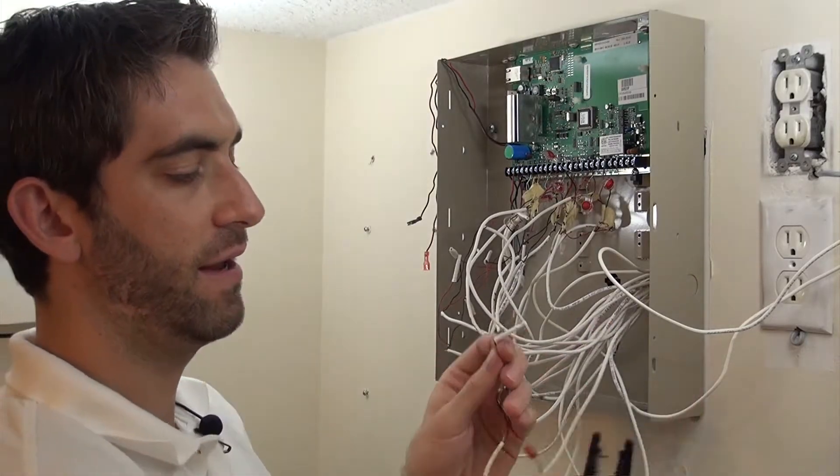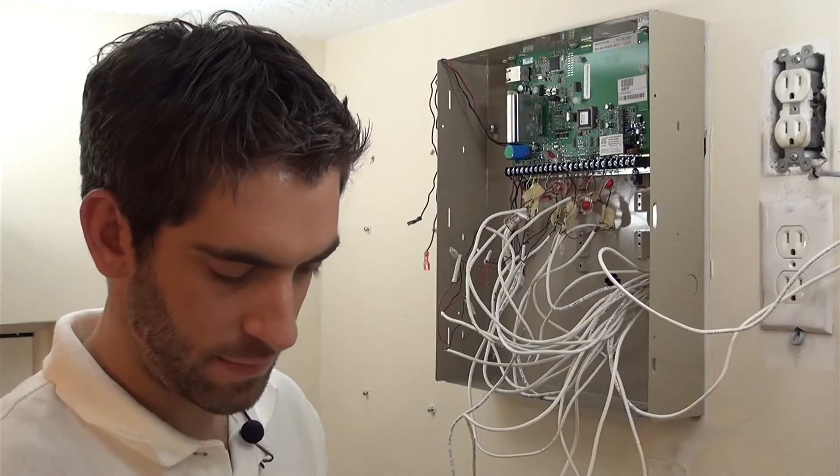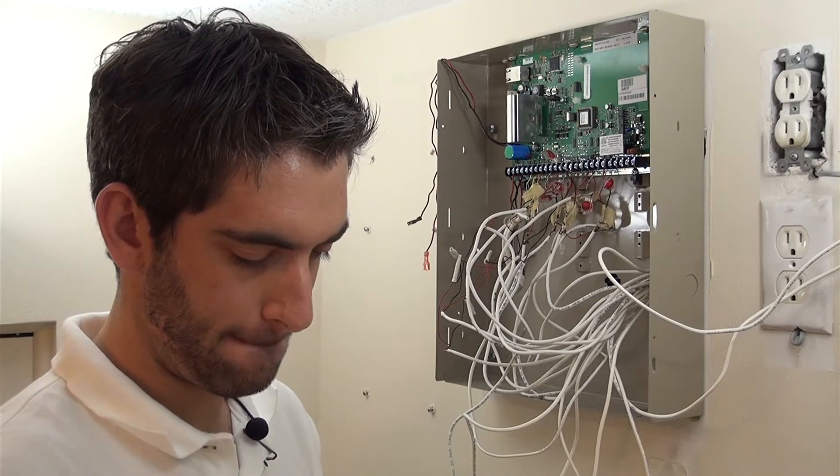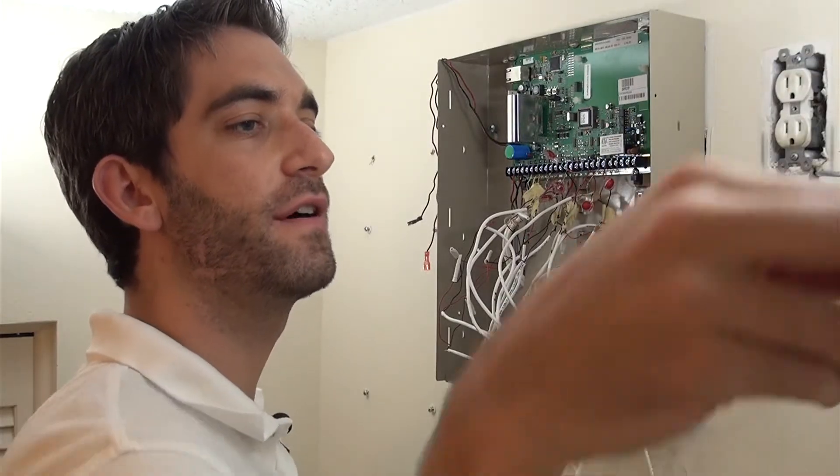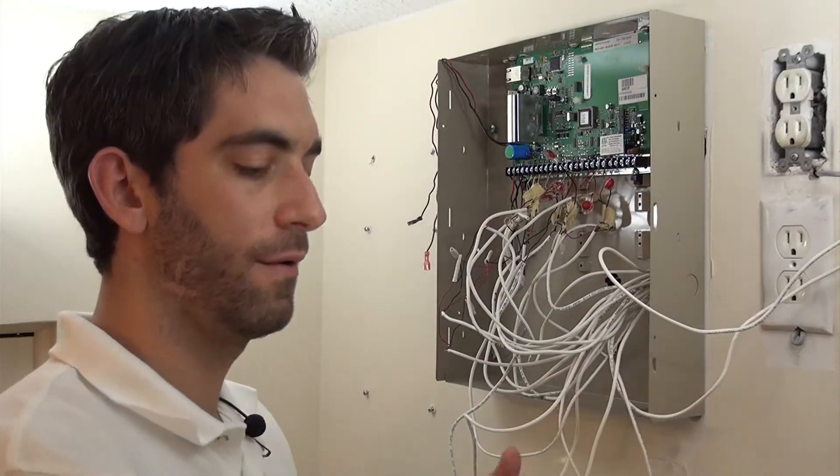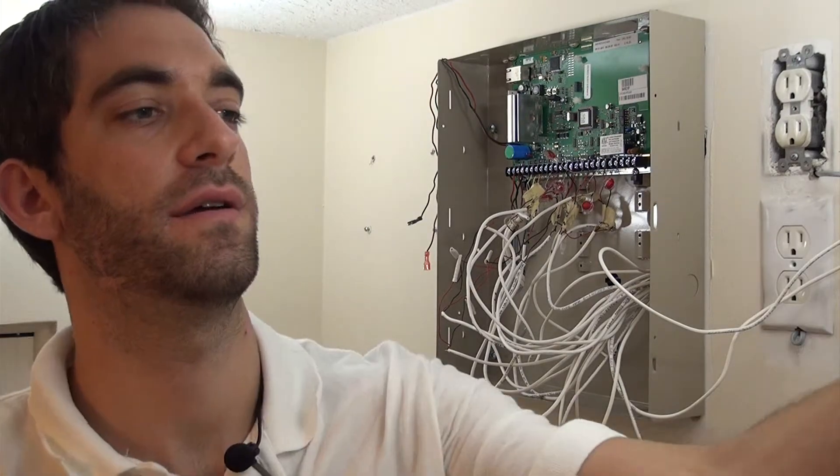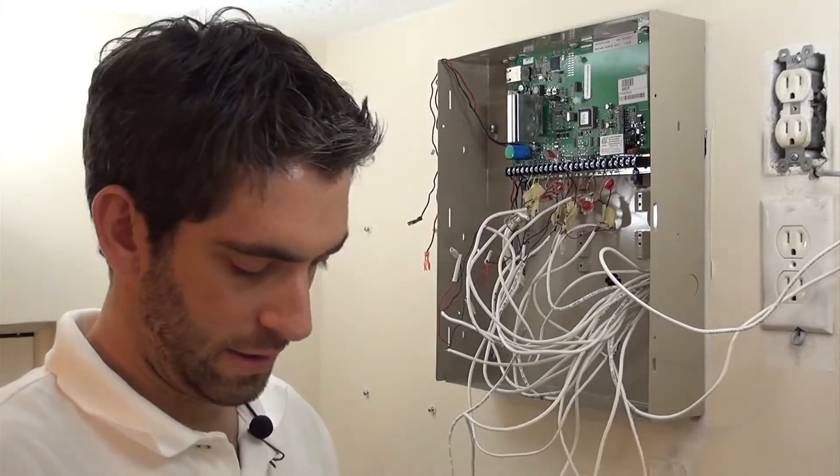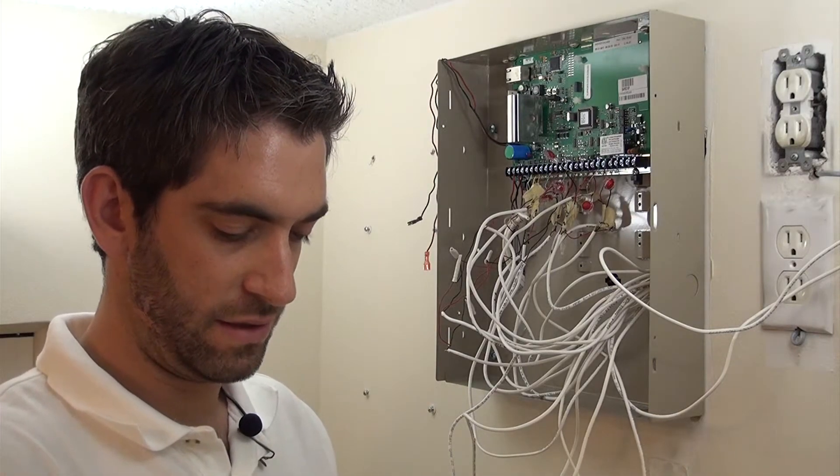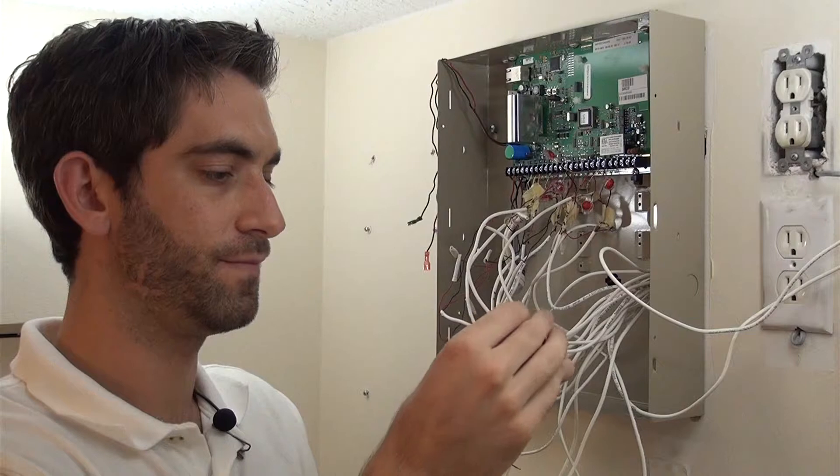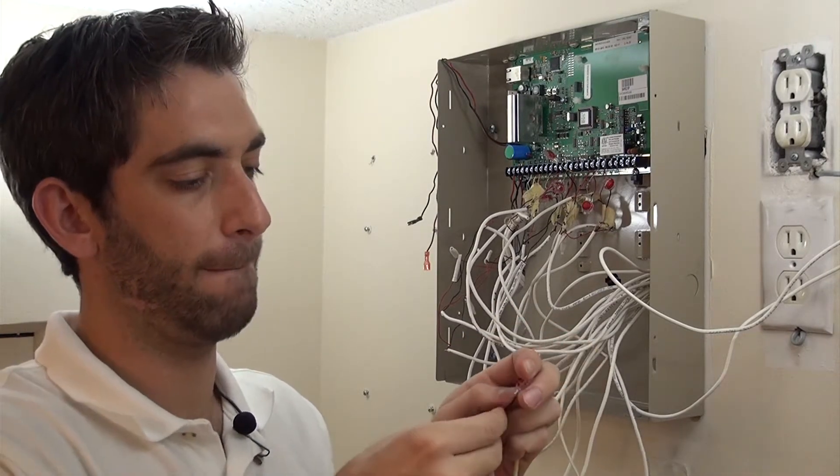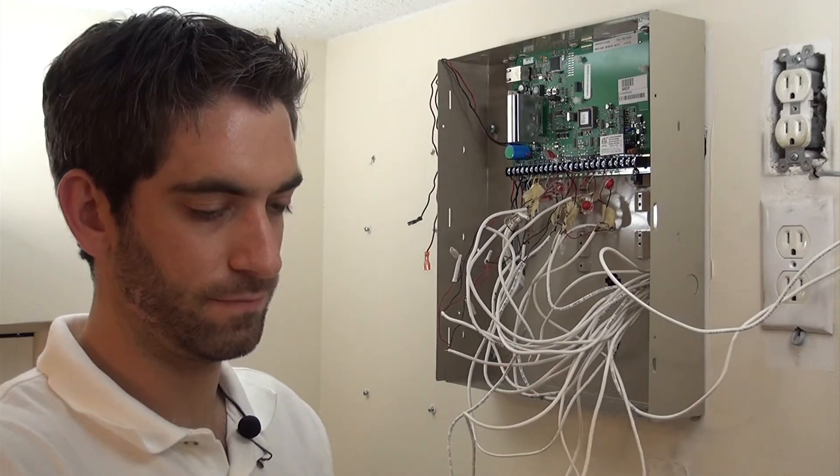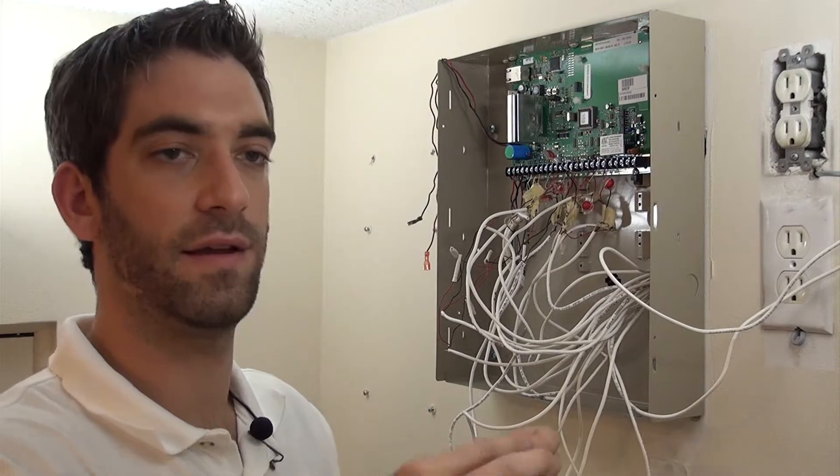So now we're left with a red and then our old resistor, which we're going to cut off. Strip the wire and this is going to be our first zone double. We're going to take our 6.2K resistor, land it in series along with our black wire. And then crimp it down.